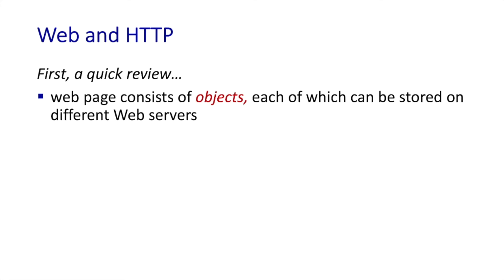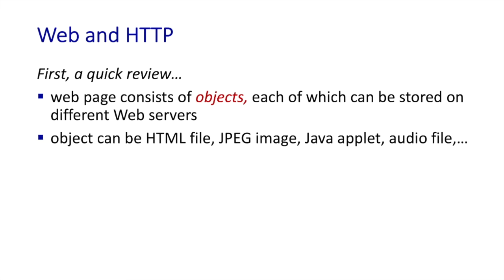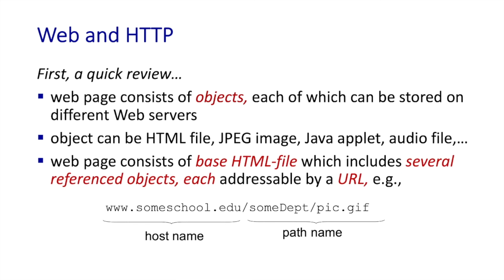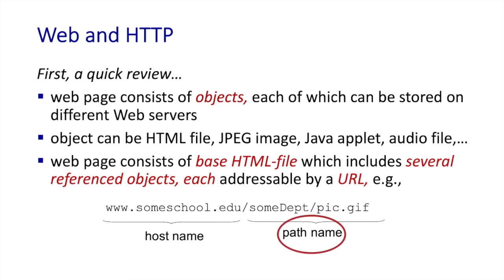Each of these objects can be stored on different web servers. An object can be an HTML file, JPEG image, a Java applet, audio file, or many other things. The web page itself, as well as the reference objects, are each addressable by what's known as a URL. There's a host name associated with it, and then on that host there's a path name piece to it.